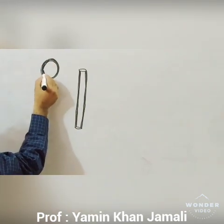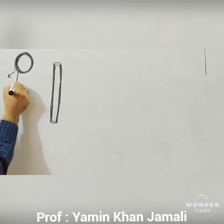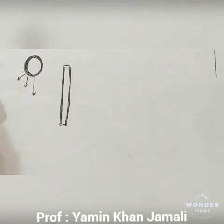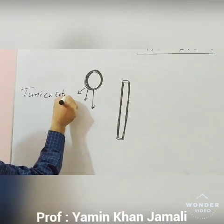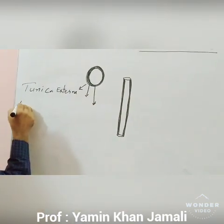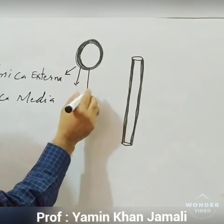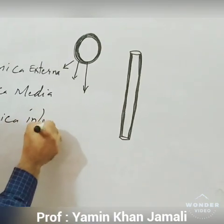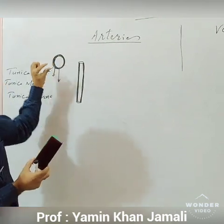The three layers of the artery are: the outer muscular layer called tunica externa, the middle layer called tunica media, and the innermost layer called tunica interna. All three layers are thick muscular layers, and together they form a thick muscular wall of the arteries.